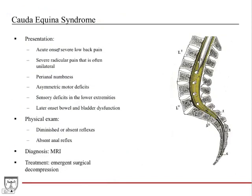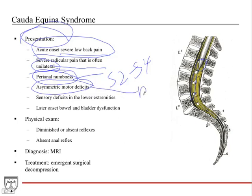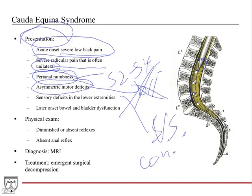Presentation — you must know this. Acute onset severe low back pain — again someone coming into the ER with really bad back pain, not someone who hurt themselves lifting boxes. Severe radicular pain is often unilateral because you're affecting individual spinal nerves, not the whole cord as in conus medullaris. Depending on which nerves are affected, particularly S2-S4, you can have perianal numbness. Asymmetric motor deficits — not bilateral — is a key distinguishing feature from conus medullaris syndrome, which causes bilateral weakness.